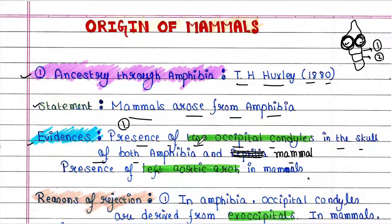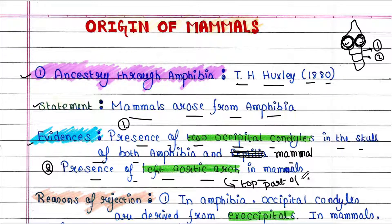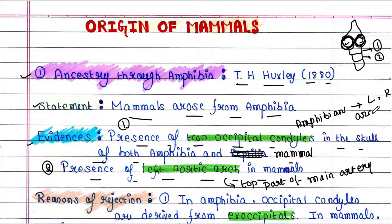The second evidence was the presence of a left aortic arch in mammals. The aortic arch is the top part of the main artery that carries blood away from the heart. Amphibians have both left and right arches, which become reduced to one — only the left — in mammals.